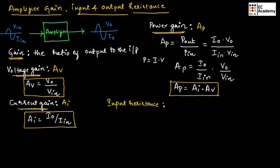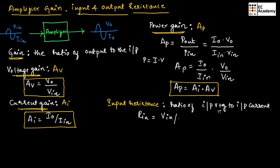Now let us understand input resistance. Input resistance is the ratio of input voltage to input current. So we can write R_in equals V_in divided by I_in.